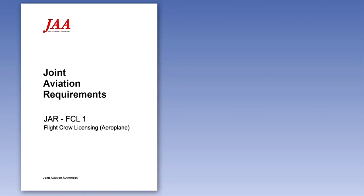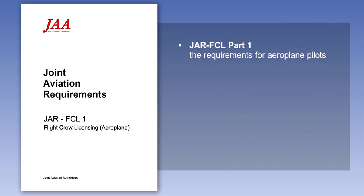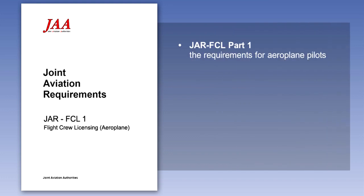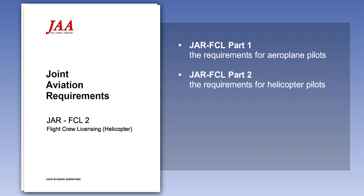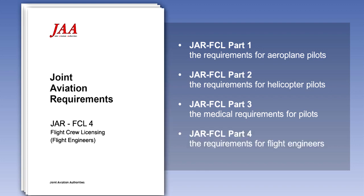The Joint Aviation Requirements Flight Crew Licensing document is divided into four parts. Part 1: the requirements for aeroplane pilots. Part 2: the requirements for helicopter pilots. Part 3: the medical requirements for pilots. Part 4: the requirements for flight engineers.